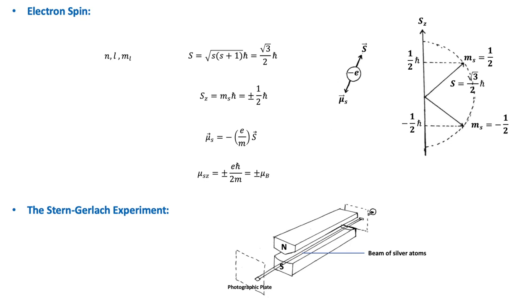To explain these phenomena, two scientists, Goudsmit and Uhlenbeck, in 1925, they proposed that every electron has an intrinsic angular momentum known as spin.